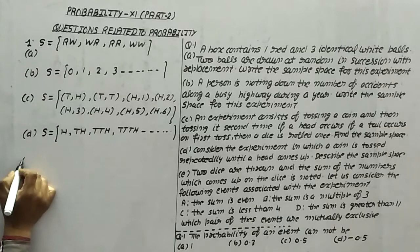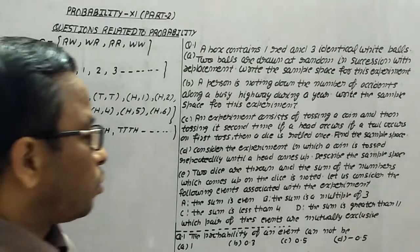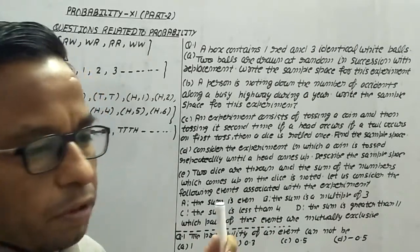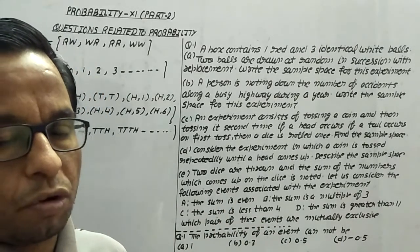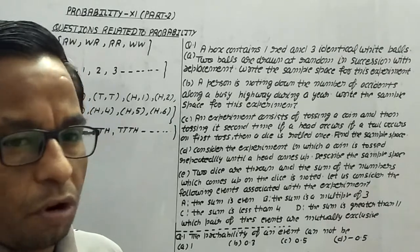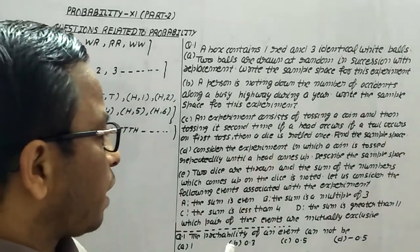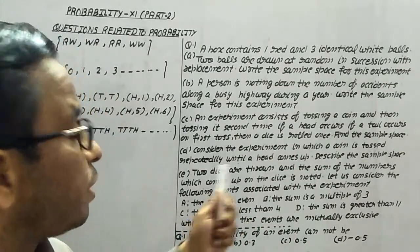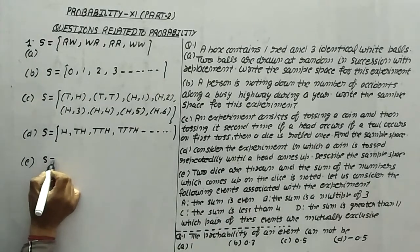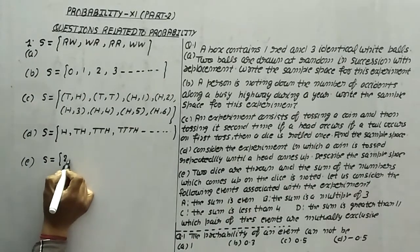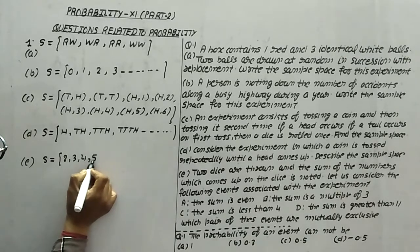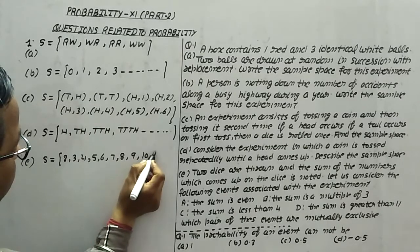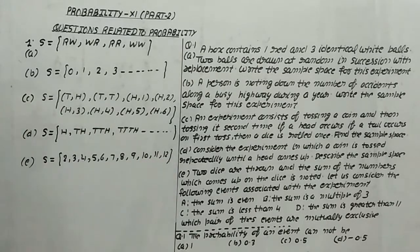In part E, two dice are thrown and the sum of the numbers which comes up on the dice is noted. When two dice are rolled, total outcomes are 36. But we have to check the sum of the numbers which comes up on the dice. So the sample space will be {2, 3, 4, 5, 6, 7, 8, 9, 10, 11, 12}.